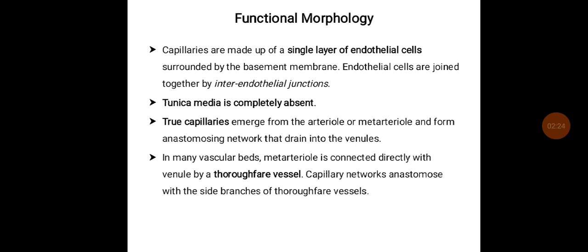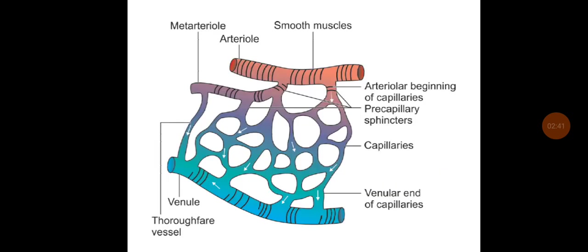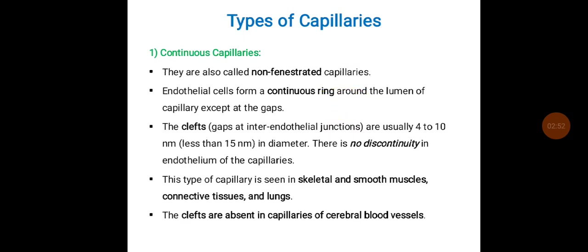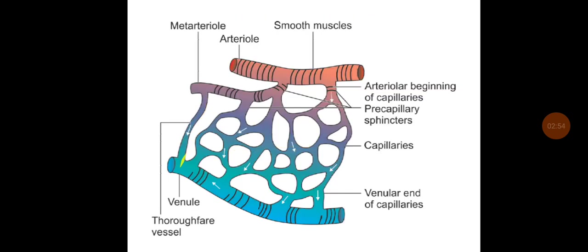In many vascular beds, the meta-arteriole is connected directly with a venule through a thoroughfare vessel. The capillary networks anastomose with the side branches of thoroughfare vessels. This diagram shows the arterioles and venules with capillaries in between. These are the pre-capillary sphincters, and this is a thoroughfare vessel.